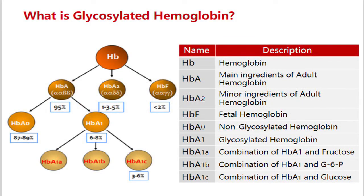The human body contains three types of hemoglobin: HbA, HbA2, and HbF. Hemoglobin A is the most common, consisting of two alpha chains and two beta chains. HbA2 and HbF are rare types, consisting of two alpha chains and two delta chains, and two alpha chains and two gamma chains, respectively.